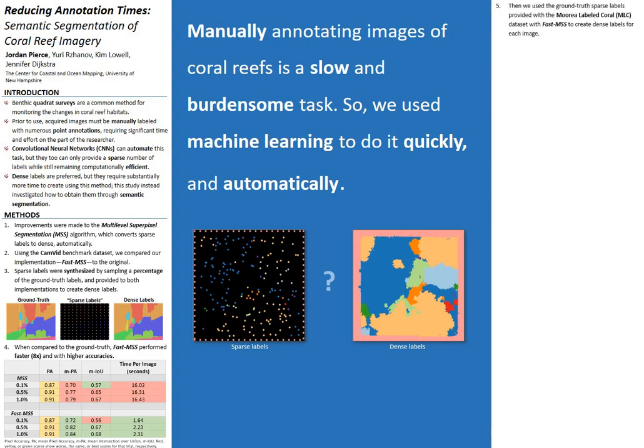Based on these results, we then turned to the Marea-labeled coral dataset, a notoriously difficult benchmark dataset for coral reef image classification. We used the provided ground truth sparse labels, as seen below, with FastMSS to create dense labels for each image in the dataset, like this one right here.